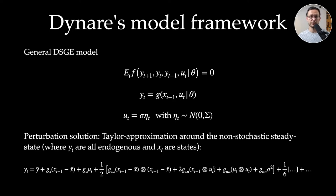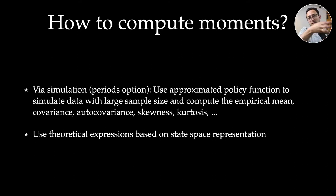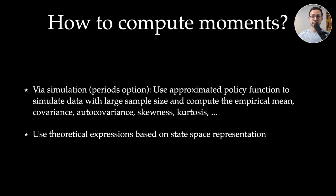How can you compute unconditional moments — the theoretical mean, variance, covariance, auto-covariances, skewness, kurtosis? There are two approaches: first, simply draw a large number of shocks, simulate your data, and compute empirical moments — by the law of large numbers, these converge to the theoretical moments. Or you can use the state space representation of the decision rules to compute these in closed form analytically.